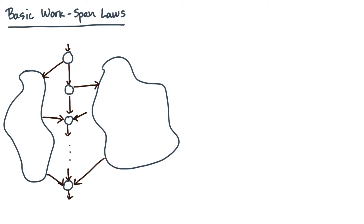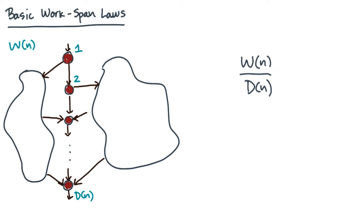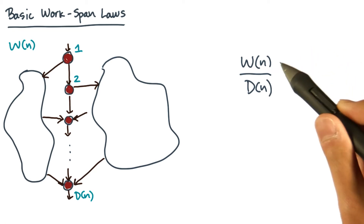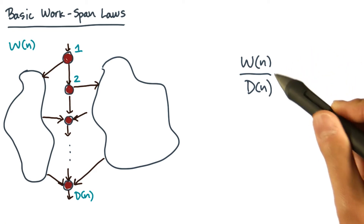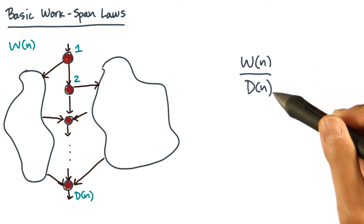Let's develop your intuition a little bit more. We'll use this hypothetical DAG. Now suppose the DAG has work w(n) and span d(n). The ratio of work to span, or w divided by d, has a special interpretation. It basically measures the amount of work per critical path vertex.